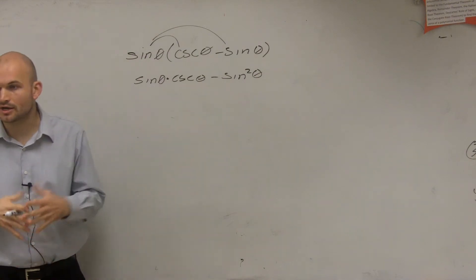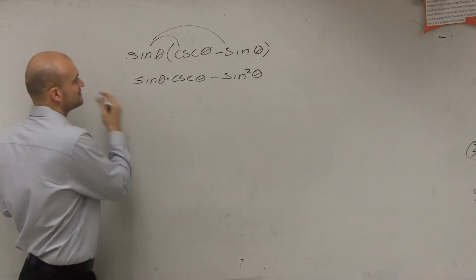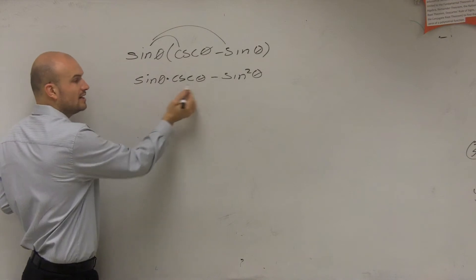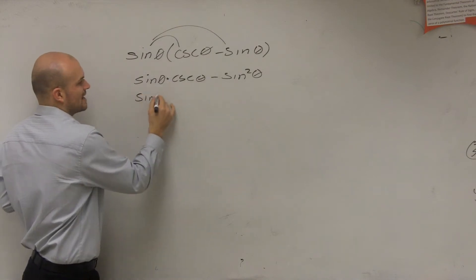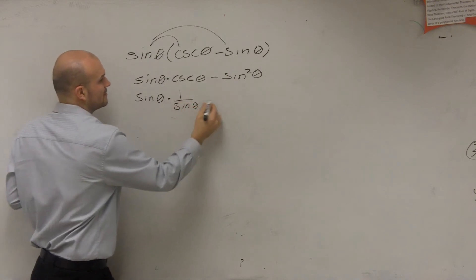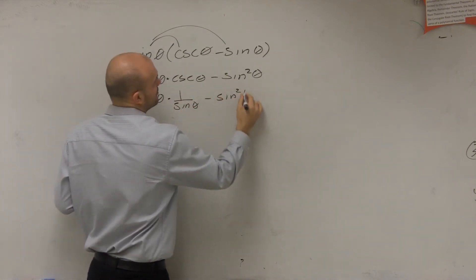So now let's apply our trigonometric terms here. So we have sine times cosecant of theta. Well, let's rewrite that as sine of theta times 1 over sine of theta minus sine squared of theta.